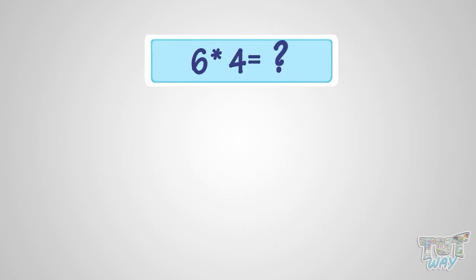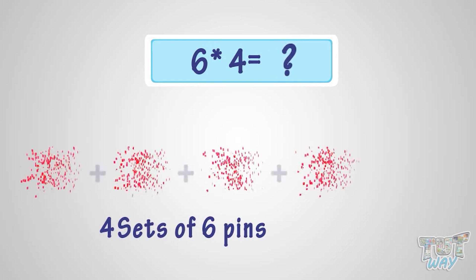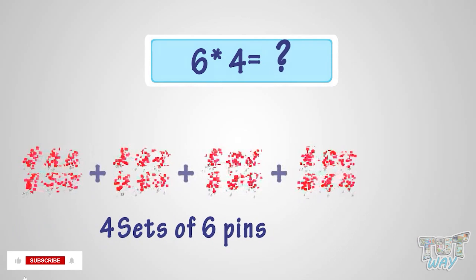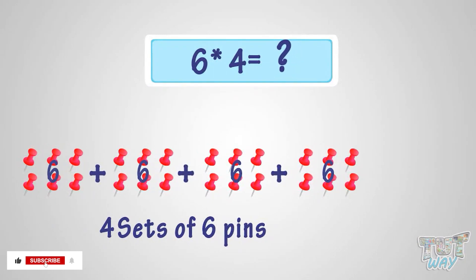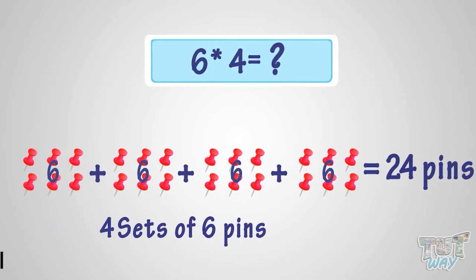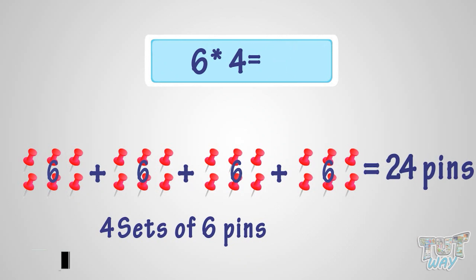What is six multiplied with four? It is the same as four sets of six pins. So it is twenty-four pins. That is, six multiplied by four is twenty-four.